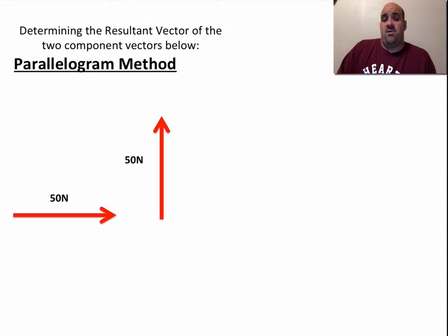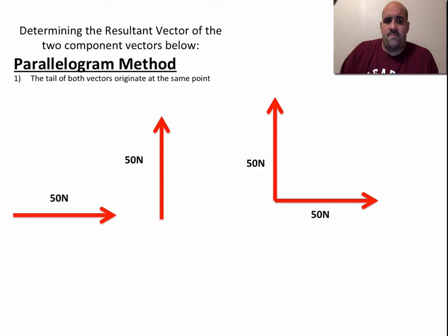The next method is called the parallelogram method. It's a simple one. It's commonly used in physics text and by teachers. I think we will probably stick to the tail-to-tip more often in class. But this is another way you could do it if you wanted to.